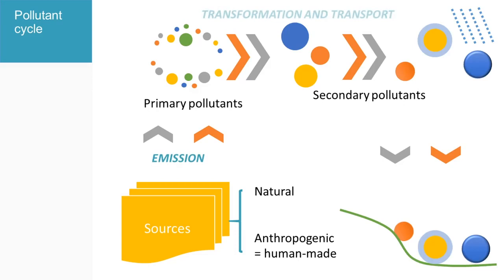To summarize, the pollutant cycle consists mainly of these steps: emission, transformation and transport, deposition.